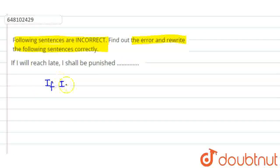If I will reach late, this is the given sentence, the first part. And second part is, I shall be punished.